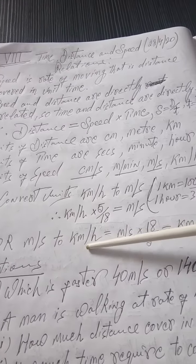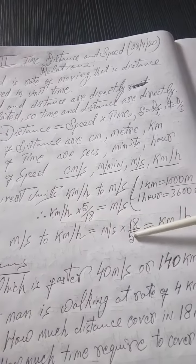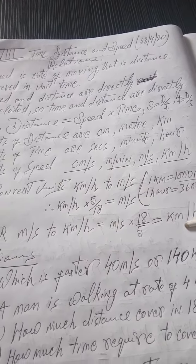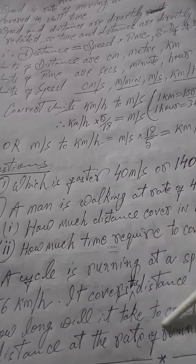Or, meter per second to kilometer per hour. Multiply by 18 upon 5, you get kilometer per hour. Now, there are some sums here. So, you do these sums.